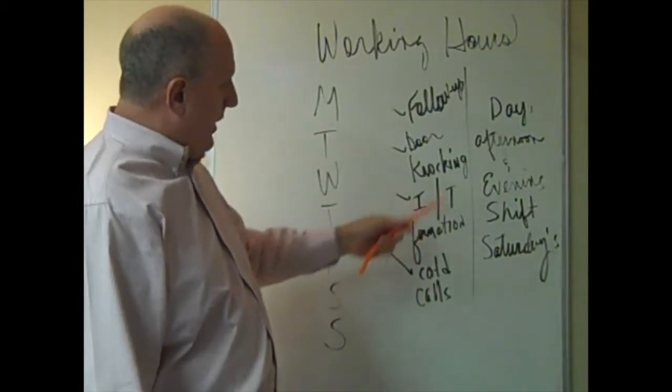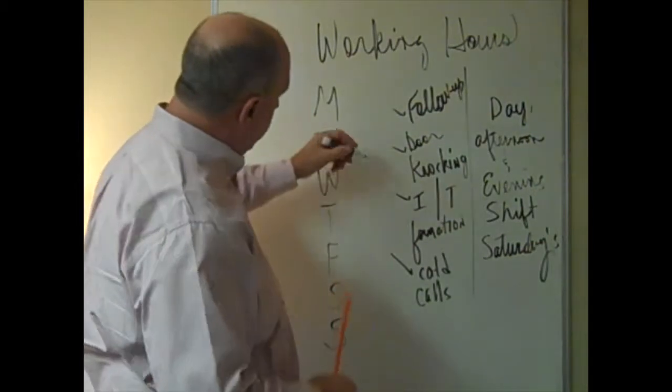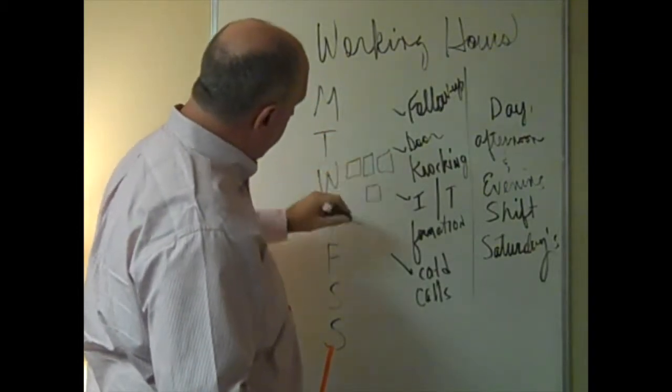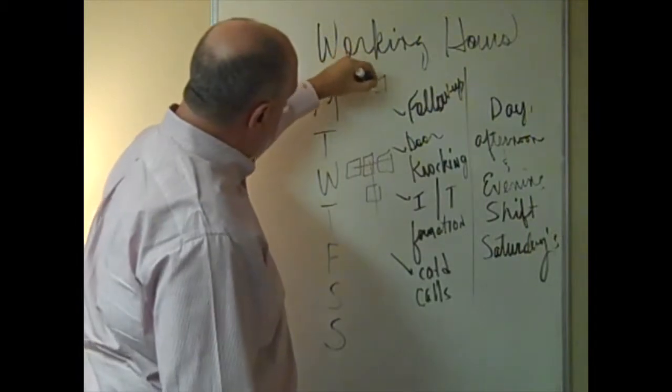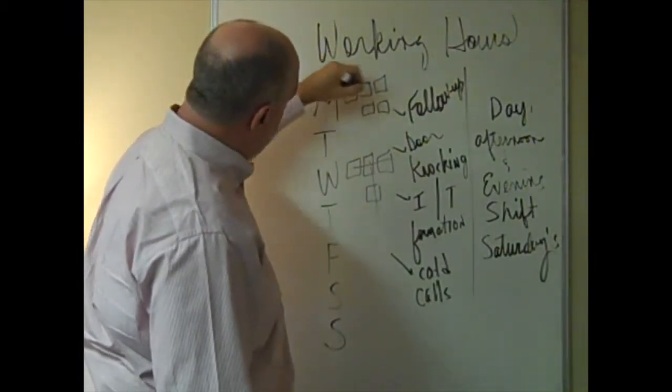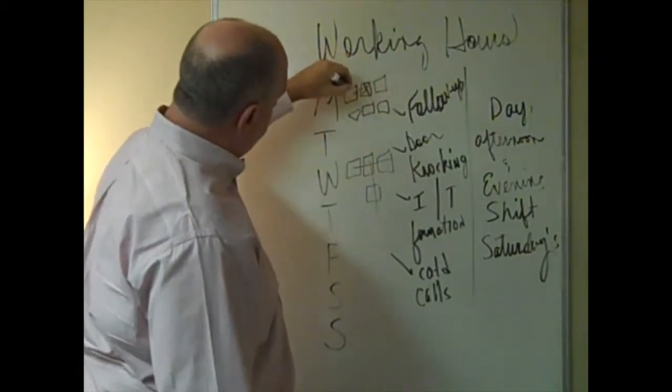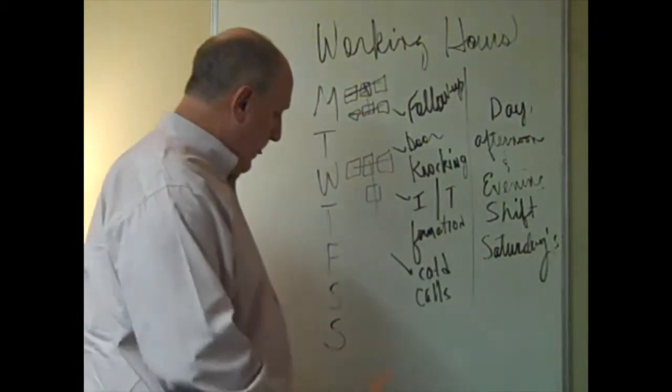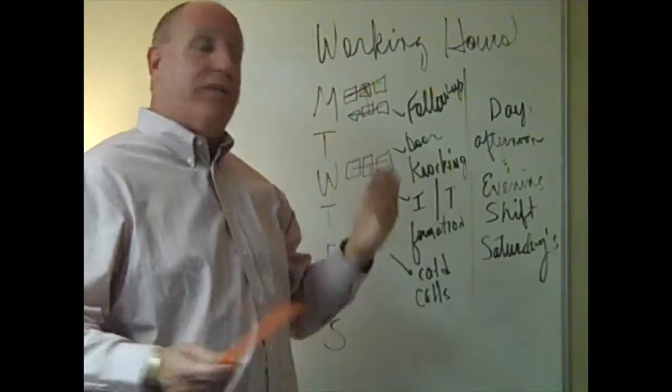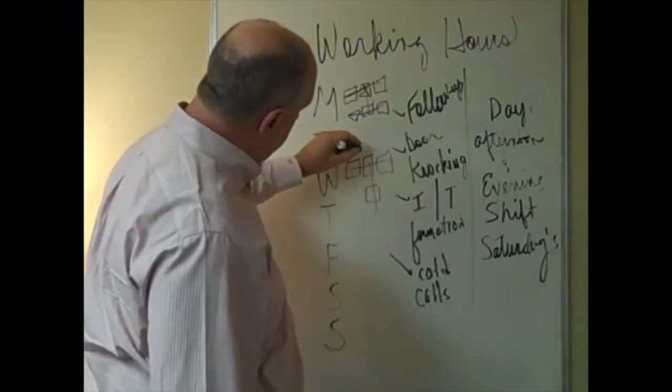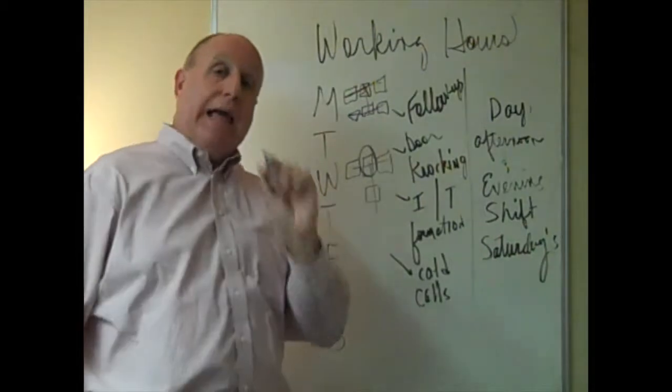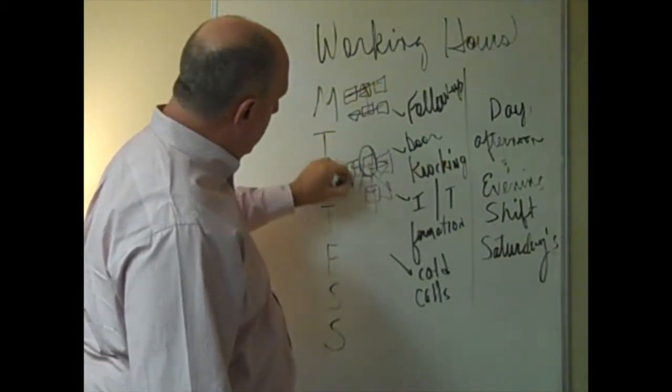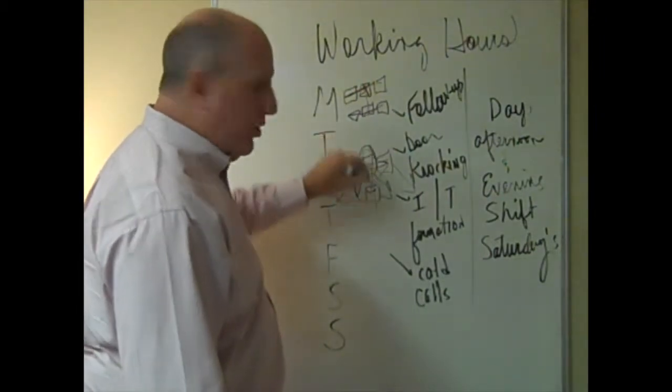I formation, T formation. What that means there is that if you have a house that you're going to visit, that's right here. This here is what you call is the T formation. There's your T. The I formation is something very simple. This is the house you're going to see here. You're going to see this house, this house, and this house here. You're going to see a total of six houses. Here you're going to see a total of four houses. Something that's been around for a long time.